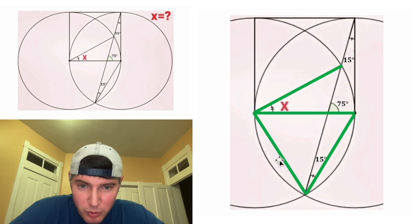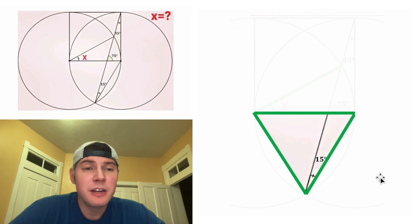And then for the left circle, if I drew one more radius right here, I would know that all three of these sides would be congruent. And that would form an equilateral triangle. In every equilateral triangle, each of the angles is 60 degrees.